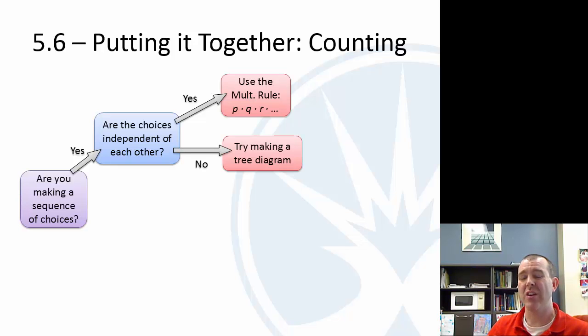If they're not, then you can try to make a tree diagram where you're splitting up all the different options. We kind of did that for the tuxedo example.